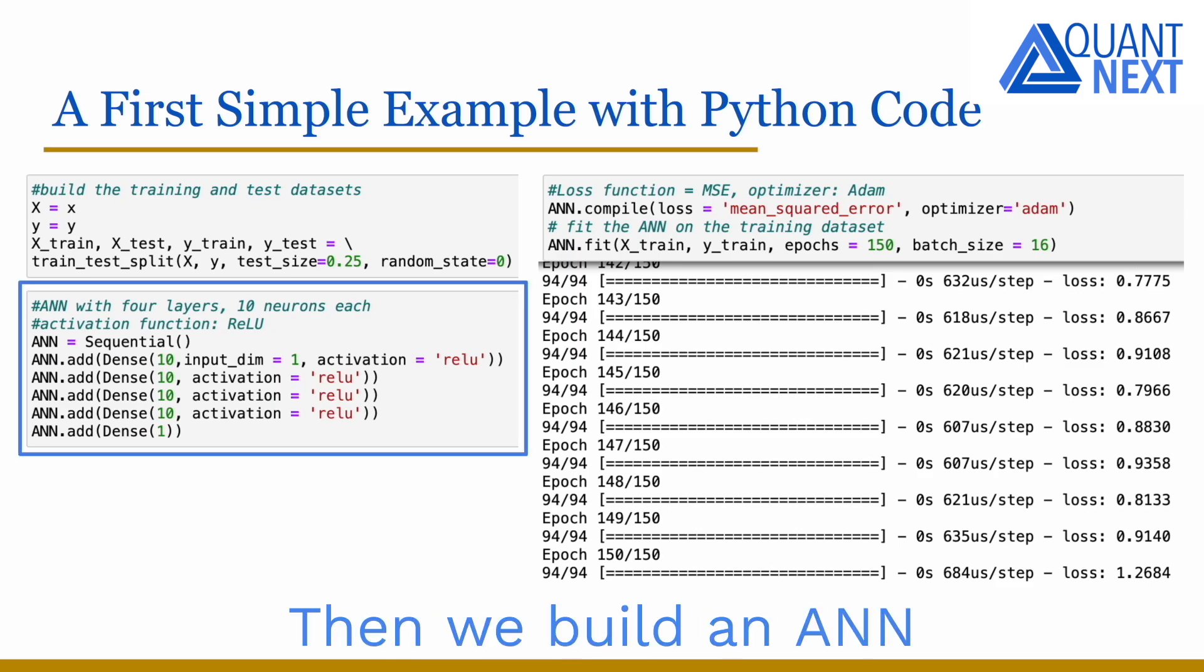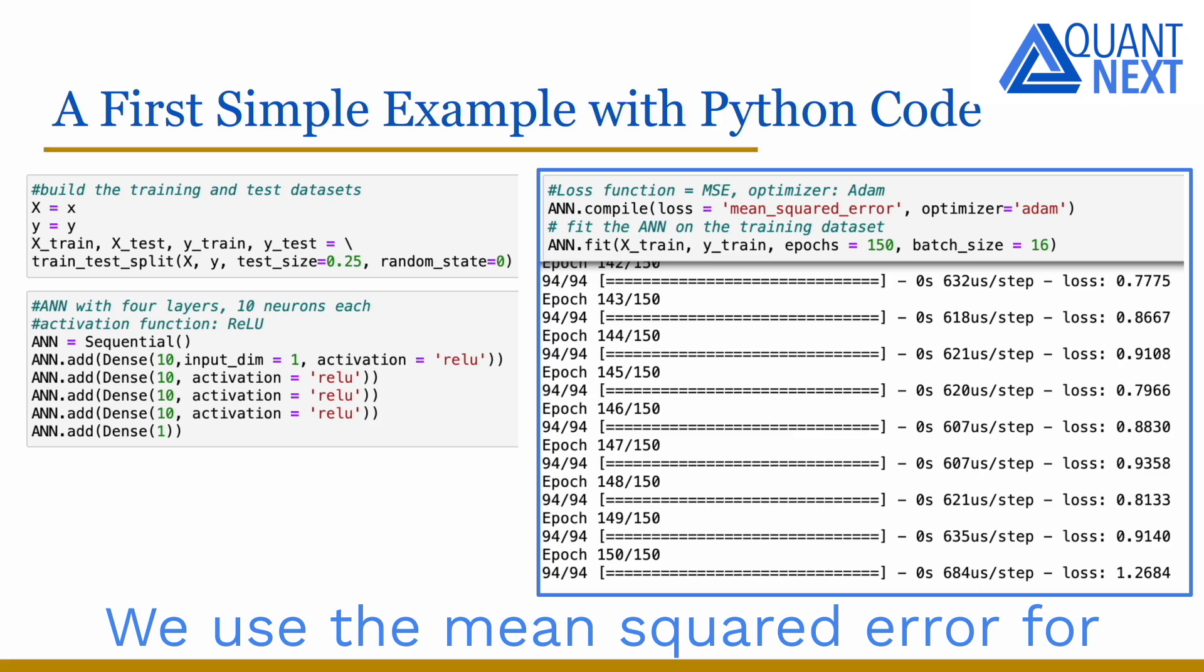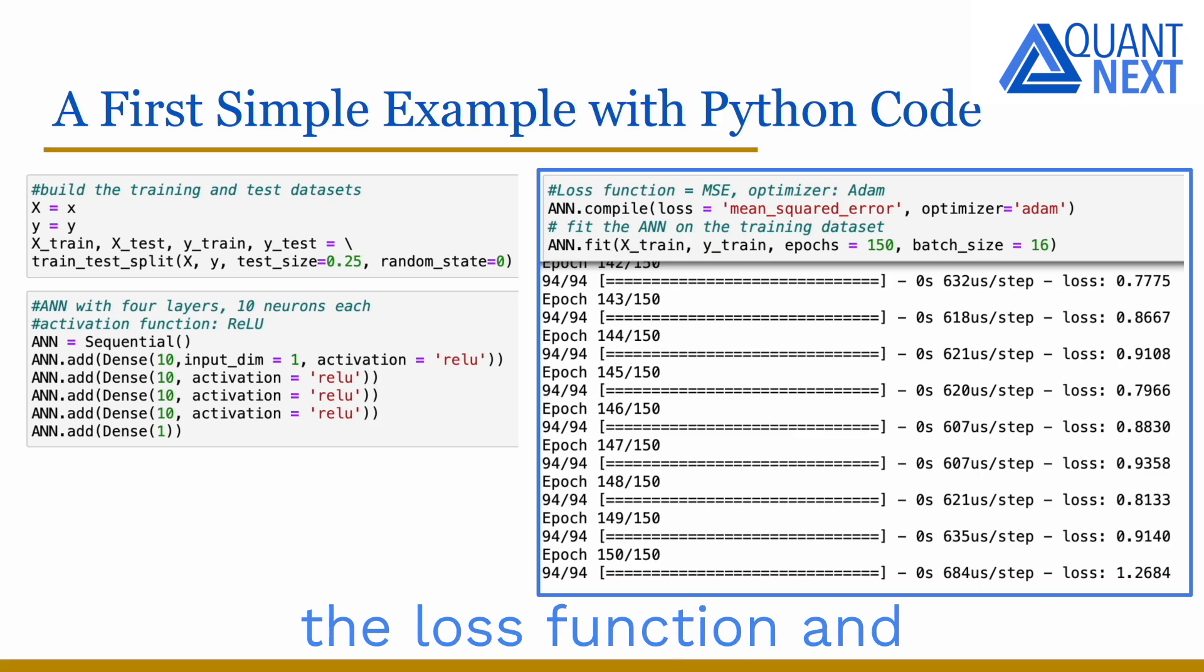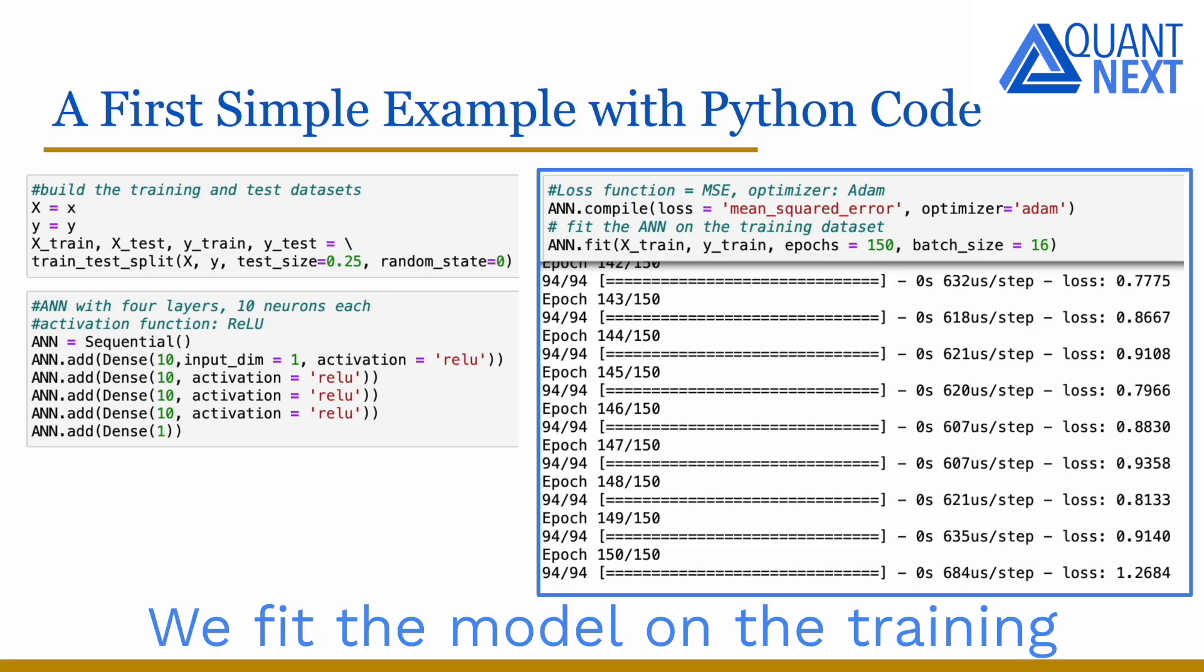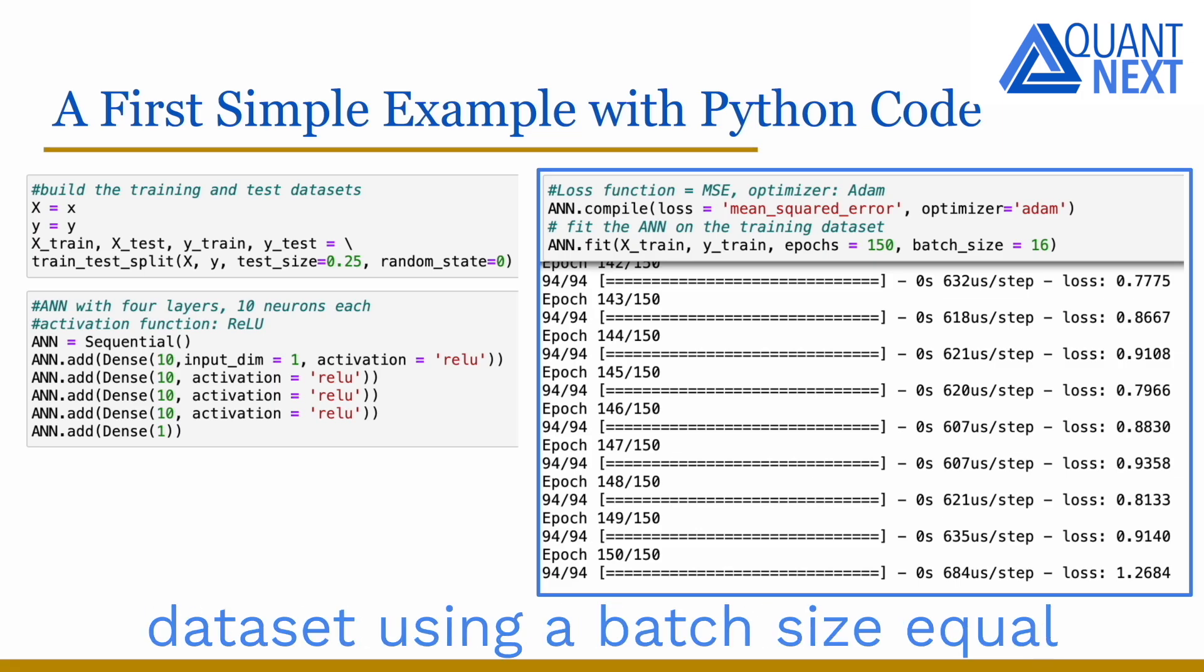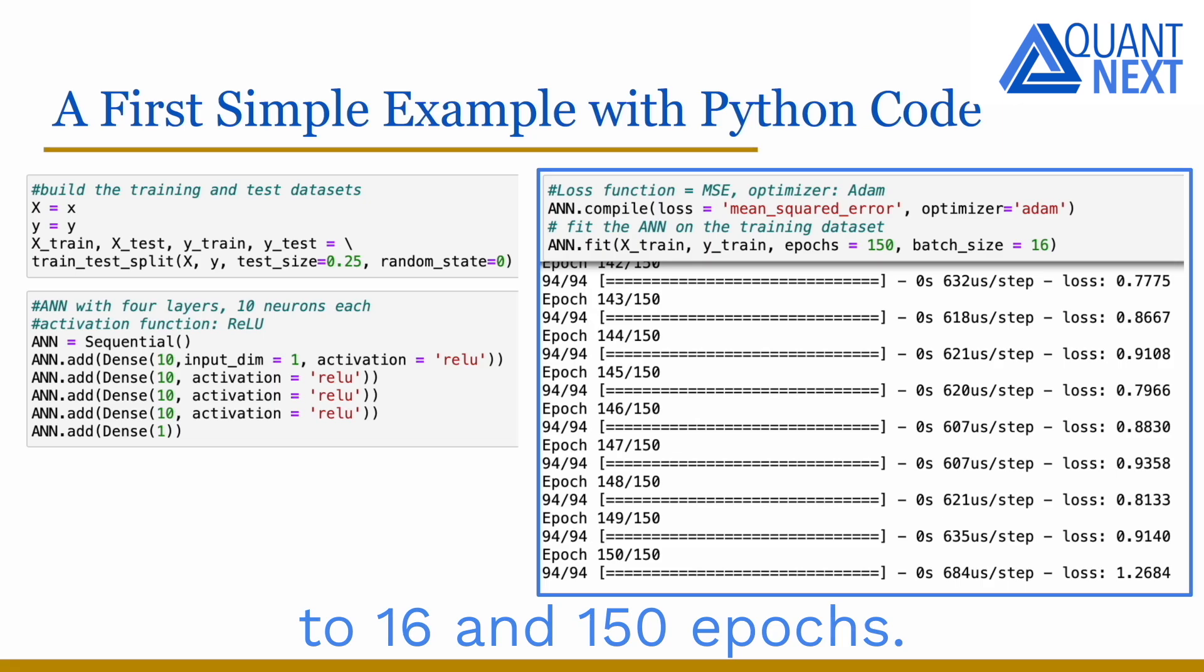Then we build an artificial neural network with 4 layers and 10 neurons in each of them. We use the mean squared error for the loss function and the Adam algorithm to minimize it. We feed the model on the training dataset using a batch size equal to 16 and 150 epochs.